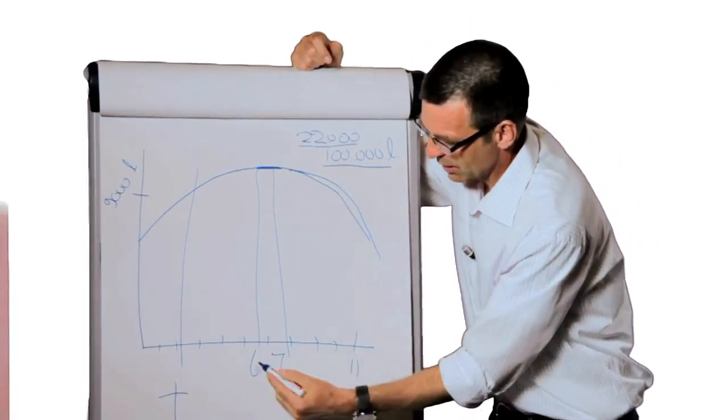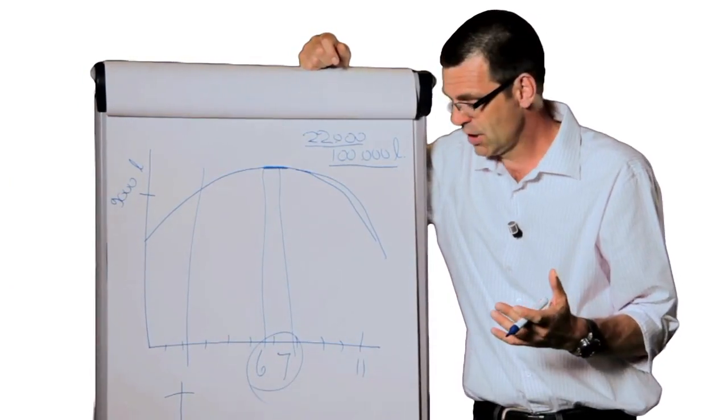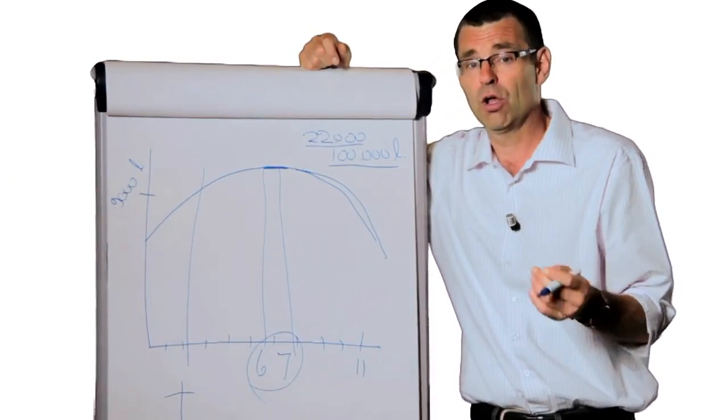And we should aim for 6, 7 years of lactation for cows. And then we earn a lot more money.